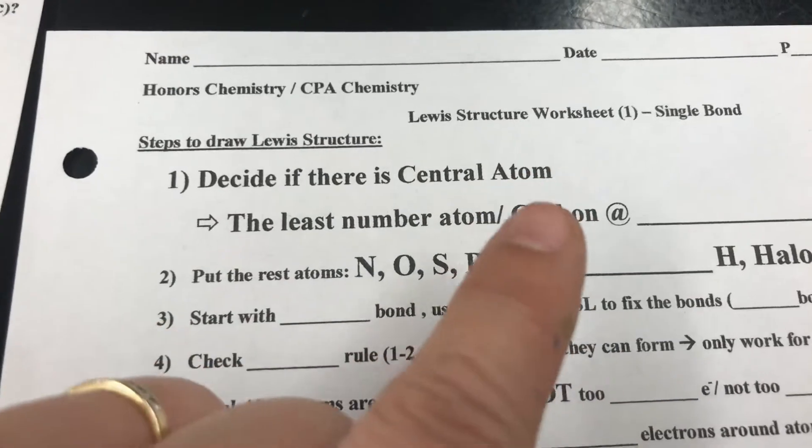After you put the rest of the atoms, you want to start with single bond. In this worksheet, it's single bond, so you can basically just look up how many bonds from the NASL and put the bonds on. But next class, we're going to talk about how sometimes your bond number from the NASL would not match with the number of bonds on your picture — in which case, you may need double bond or triple bond.